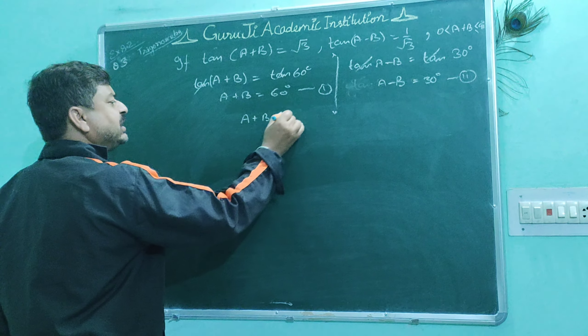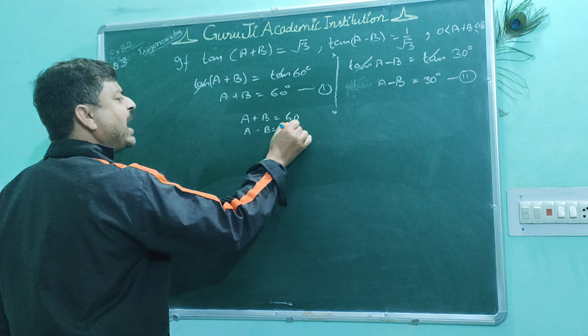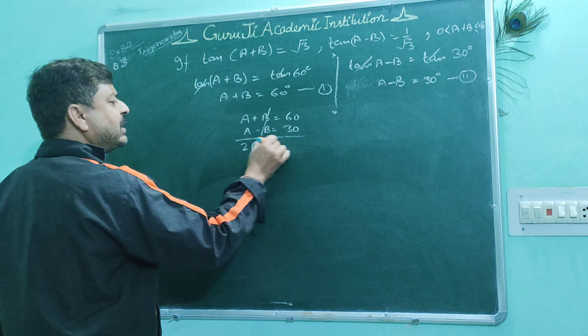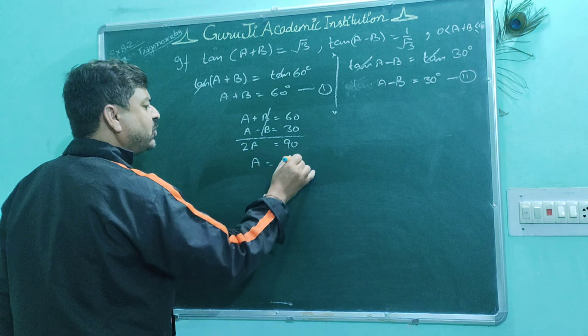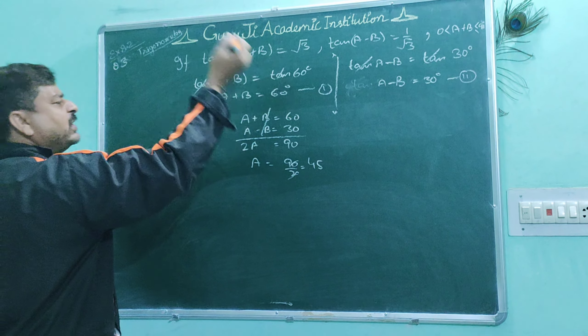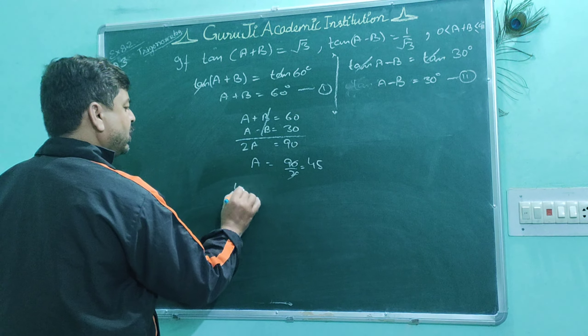So we have a+b = 60 degrees and a-b = 30 degrees. Adding these equations: 2a = 90, so a = 45 degrees.